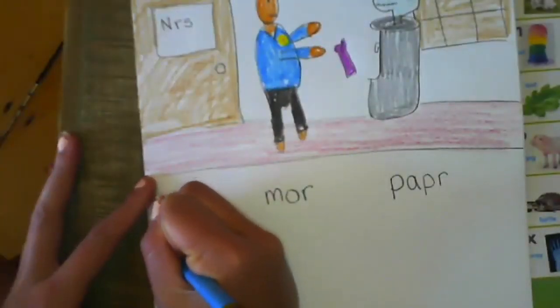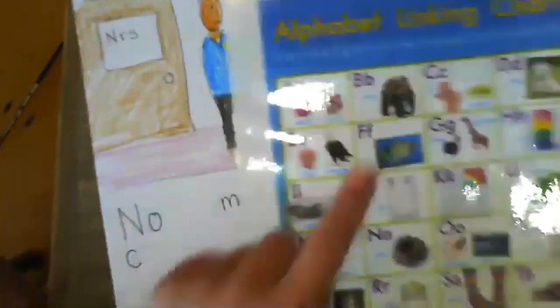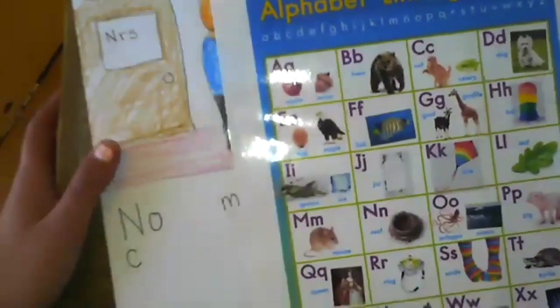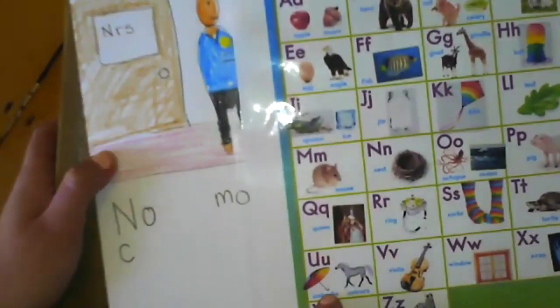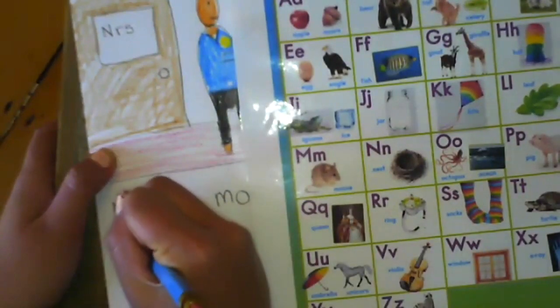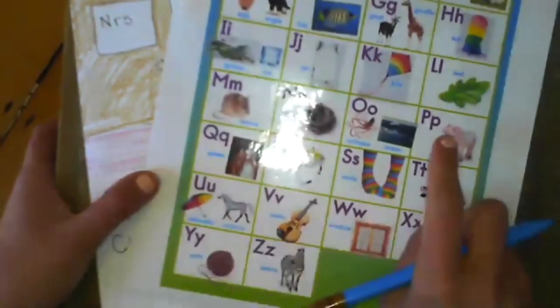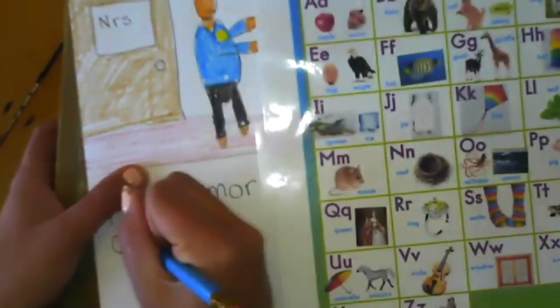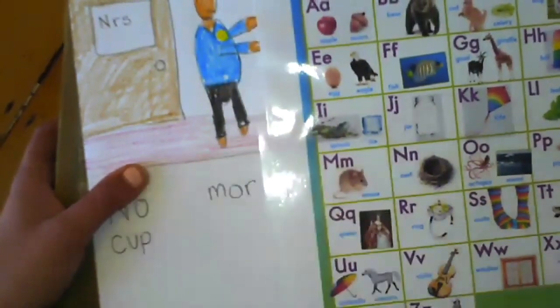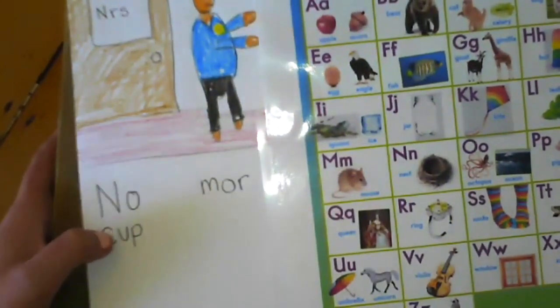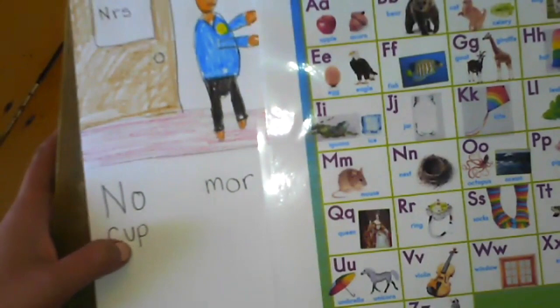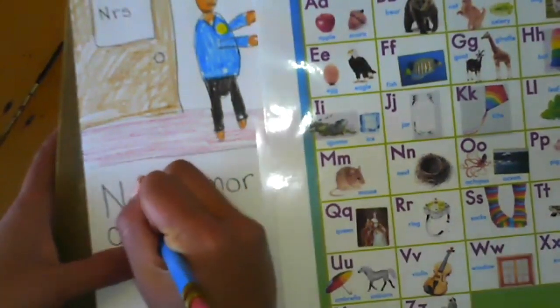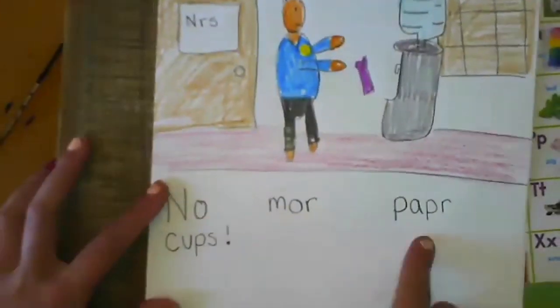No more paper cups. C umbrella A. Cup, P pig P. No more paper cups! Cups S socks! And then exclamation, no more paper cups!